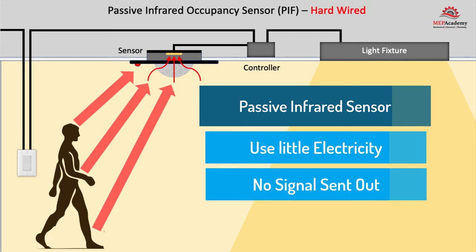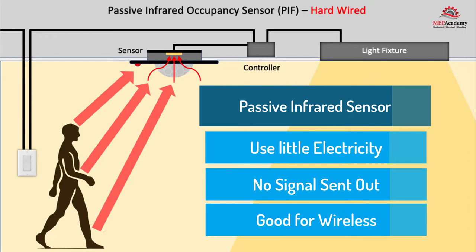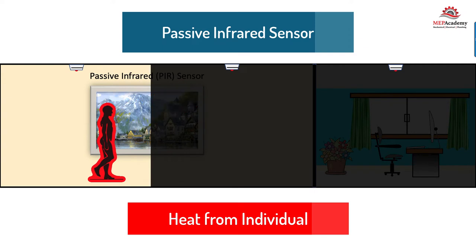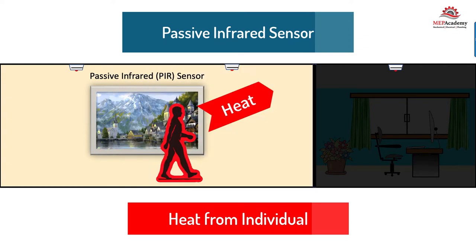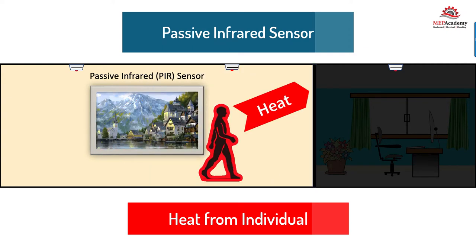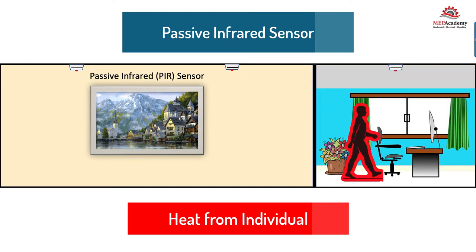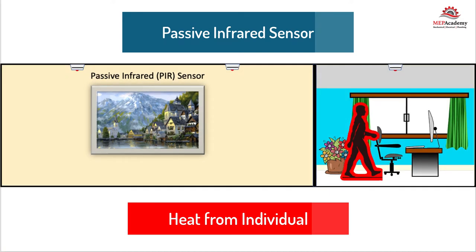A passive infrared sensor uses very little electrical power because it doesn't constantly send out a signal like an ultrasonic sensor, making it great for wireless communication. The passive sensor picks up the heat emitted from individuals in the space, so it needs a direct line of sight to work. It doesn't work well when there are obstructions like partitions or bookshelves.